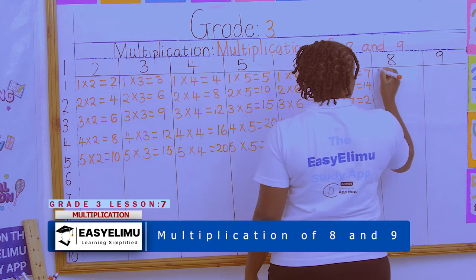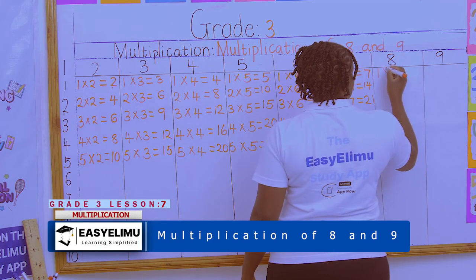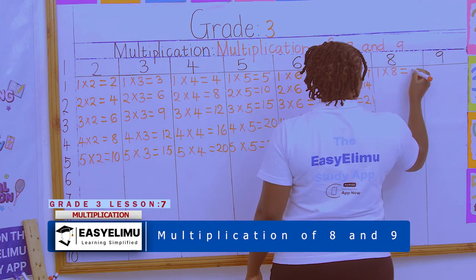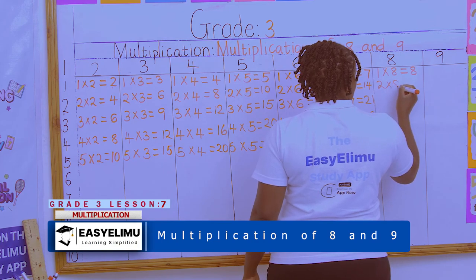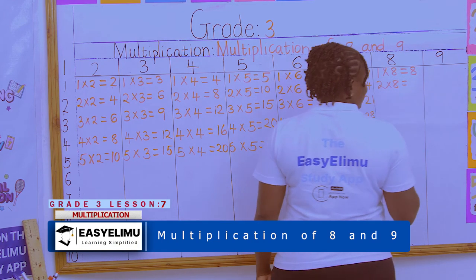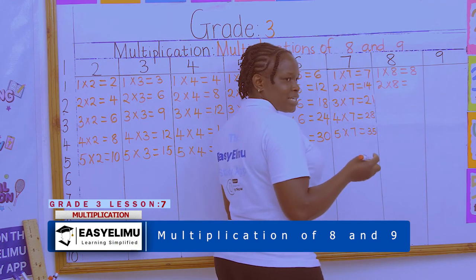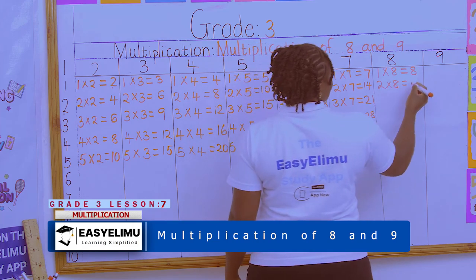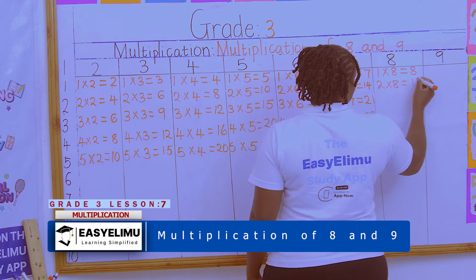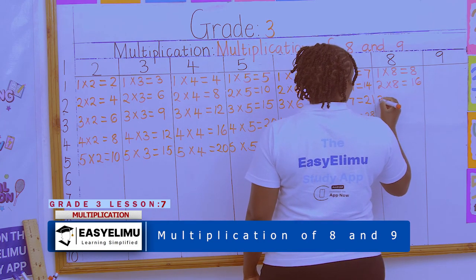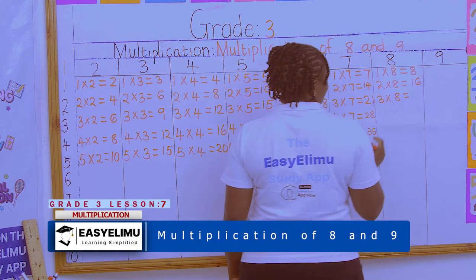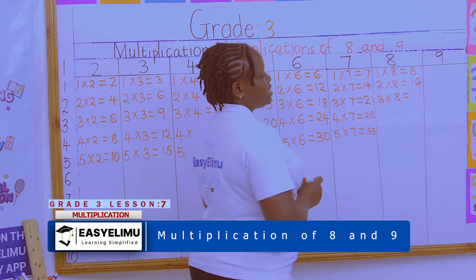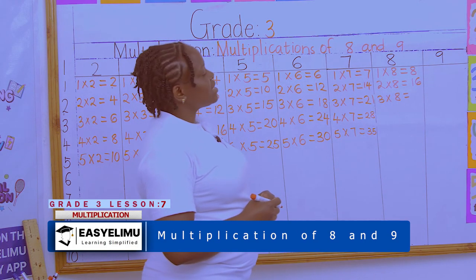Now we are on the multiplication table of number 8. Any number times 1 is that number. 2 × 8 is 8 + 8 = 16. 3 × 8 is 16 + 8 = 24.